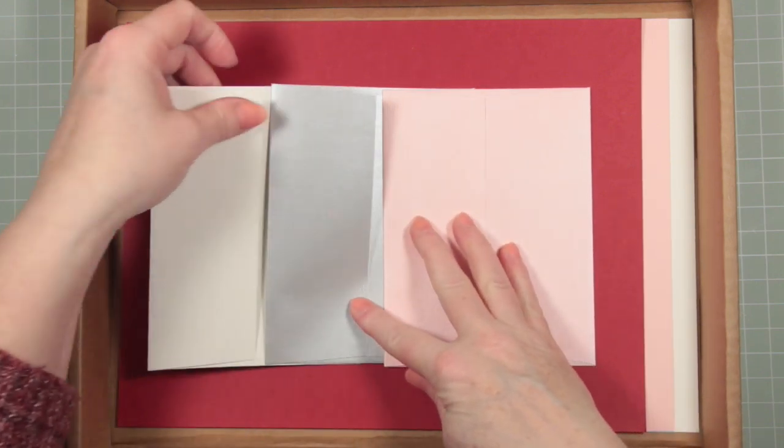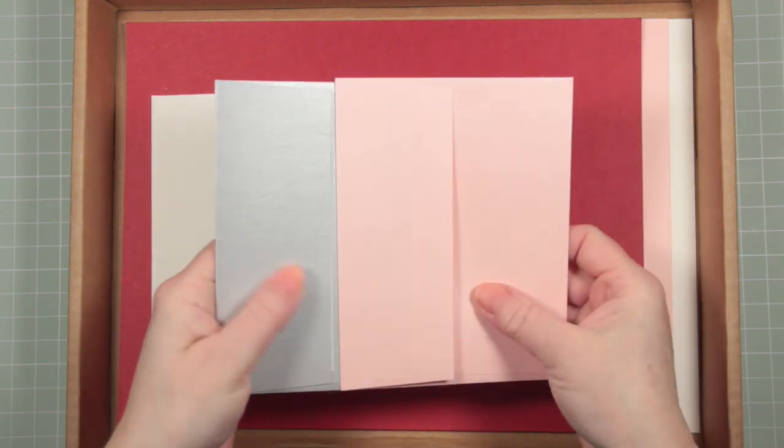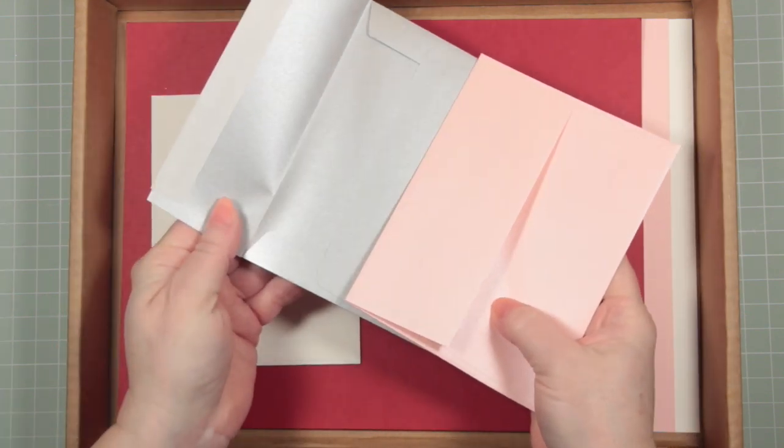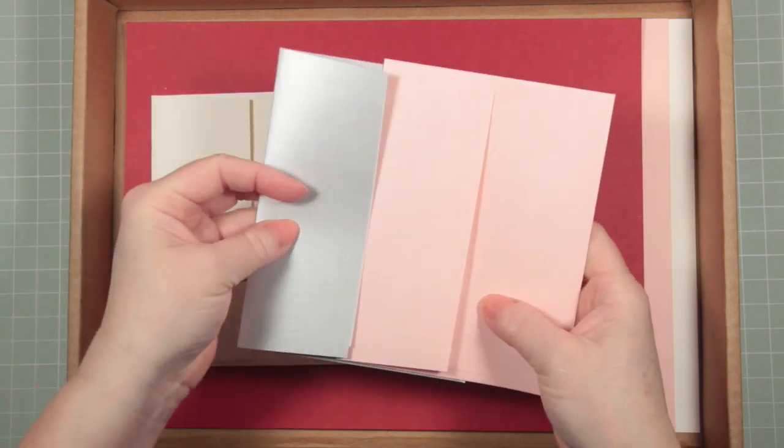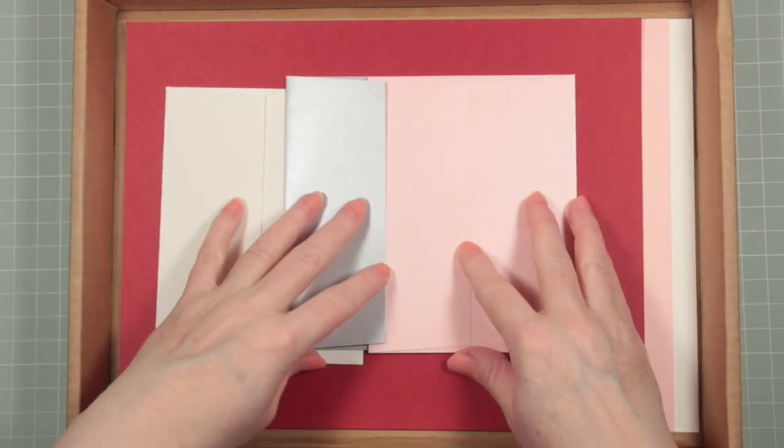This kit has three envelopes - two are pearlized, the grey and the pink ones, and there's a plain white one with a self-adhesive closure. The cardstock is ivory, cotton candy and schoolhouse red.